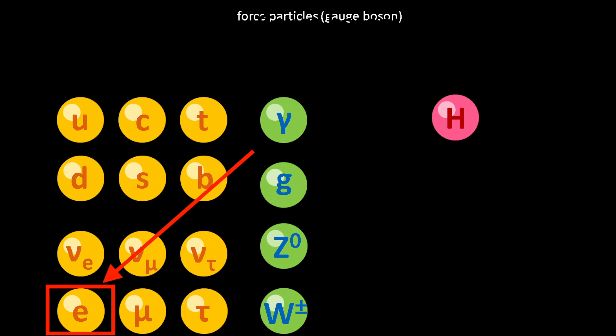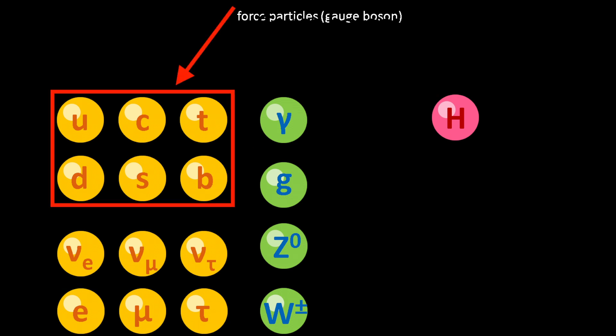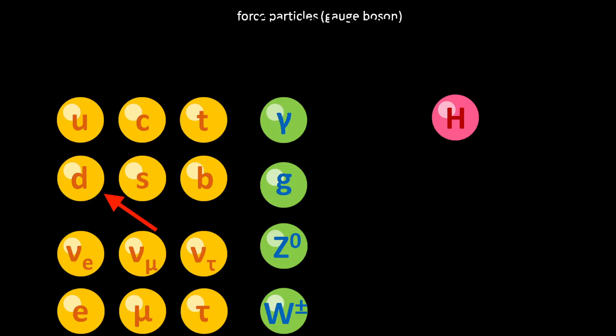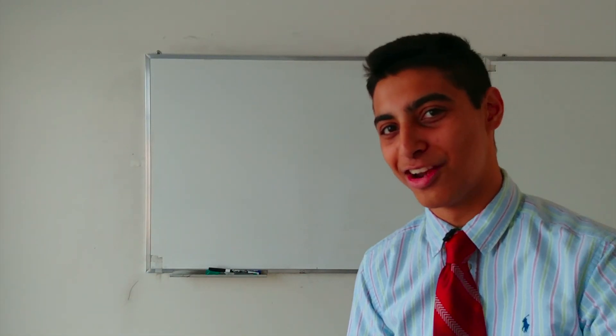The quarks make up our protons and neutrons, and our leptons are the electrons, as you can see over there. As you can also see, the quarks split up into six different flavors. Why are they called flavors? Well, it's a lot about just random naming schemes. So there are six different flavors of quarks: up, down, top, bottom, charm, and strange. Really weird names, I know, but there's nothing I can do about it.